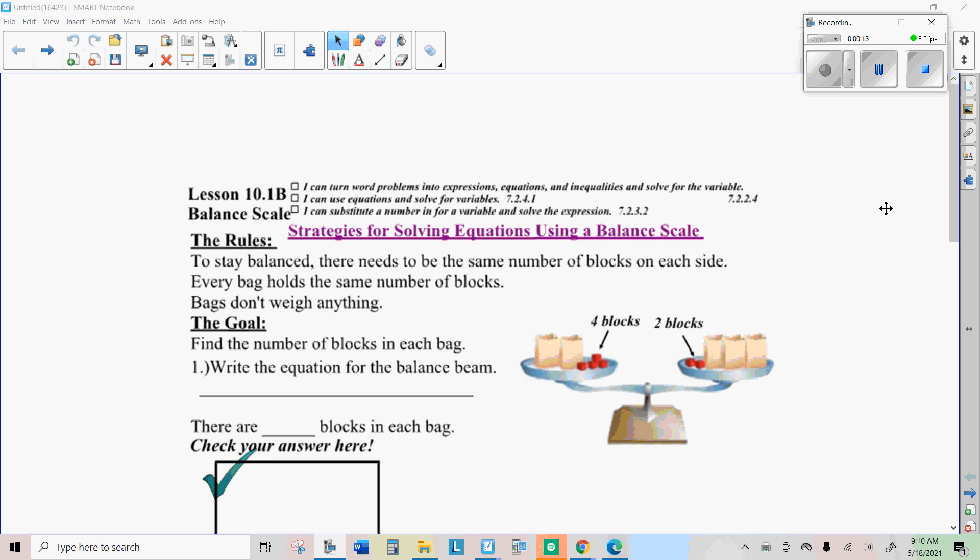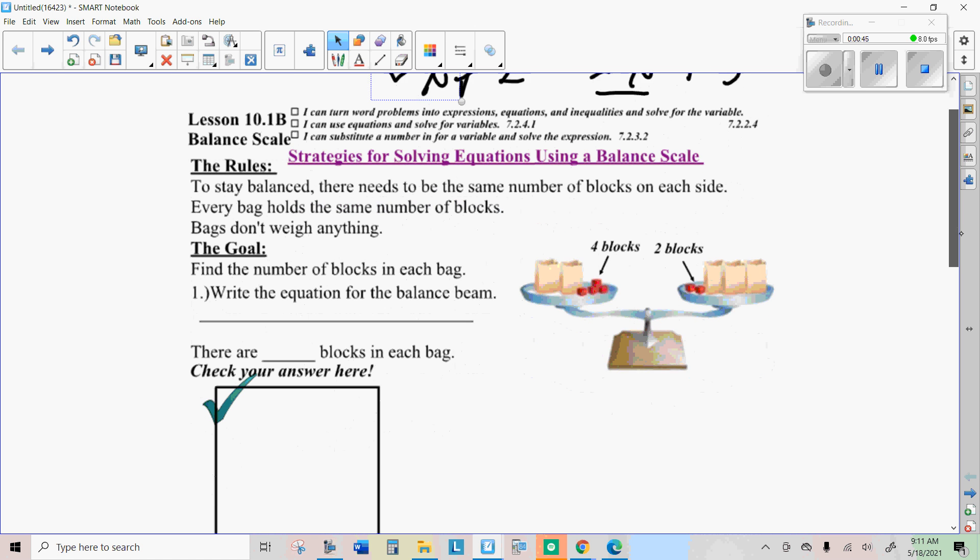Remember that when we have equations like this, where we have a variable on both sides, it makes it hard to solve by backtracking. And so we were guessing and guess checking and revising to solve those. Well, this strategy will allow us to get rid of the x's from one side, and then we'll be able to solve the rest of the equation by backtracking.